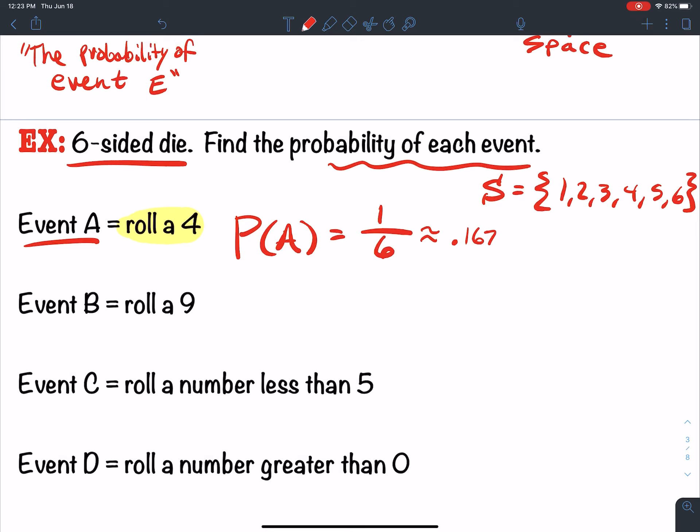So it's not impossible, but it might be unlikely for you to guess what the die is going to land on. Can you do it? Sure. Is it likely? Not likely.